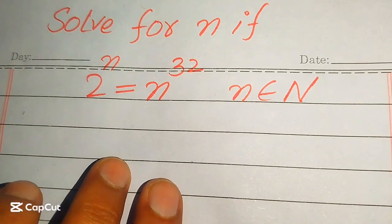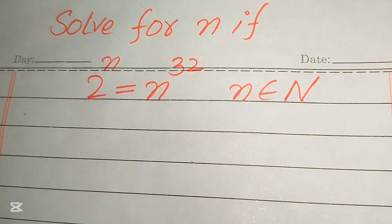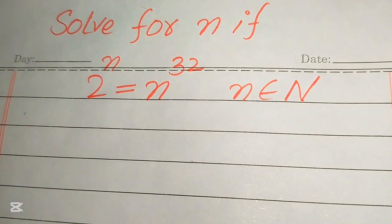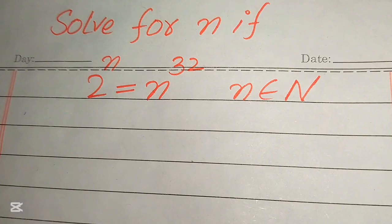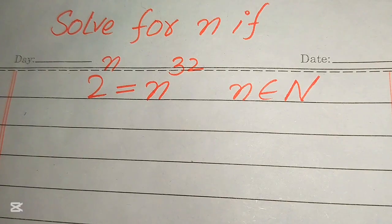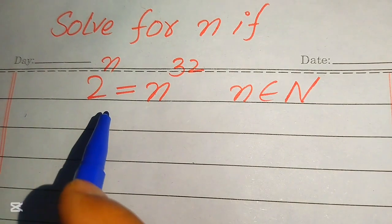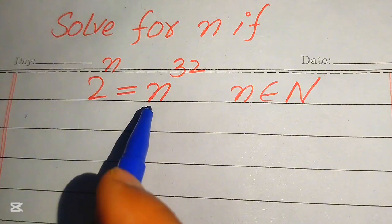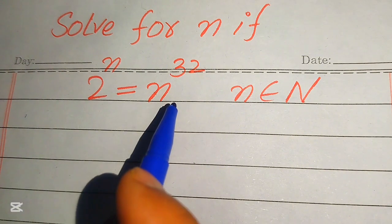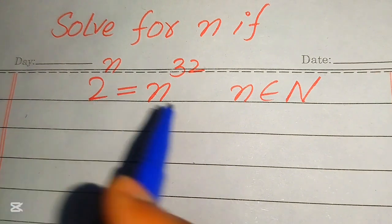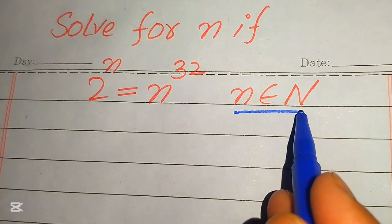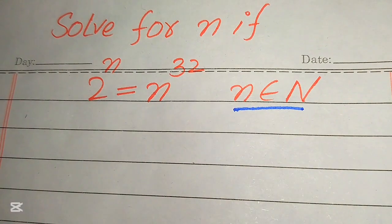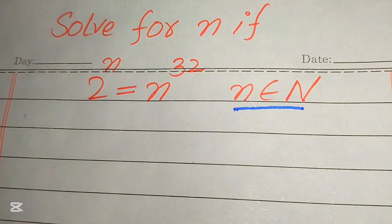Hello everyone, today I want to show you how to solve this problem for the values of n. If we have 2 to the power of n equals n to the power of 32, and we solve this problem for the natural values of n, because here n must belong to the natural numbers.